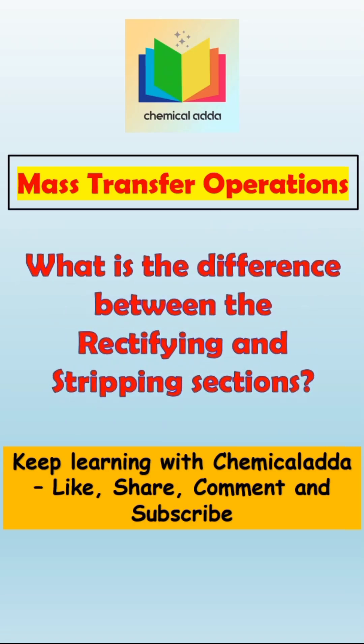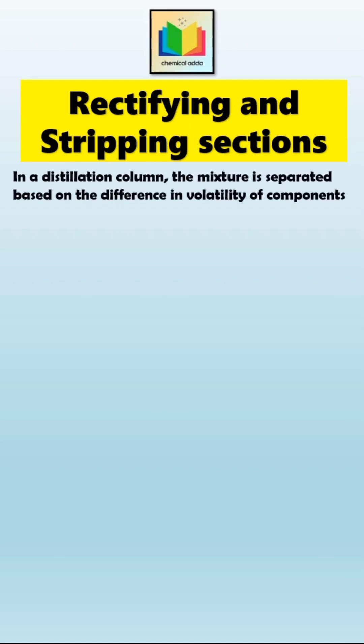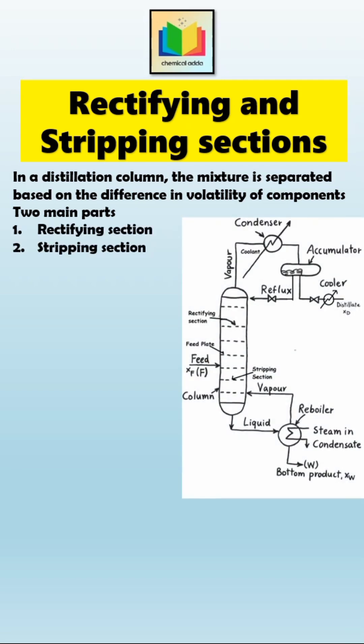Let's quickly understand what is the difference between rectifying and stripping sections in a distillation column. As we know, in a distillation column the mixture is separated based on the difference in volatility of components, and it is divided into two main parts: the rectifying section and the stripping section.